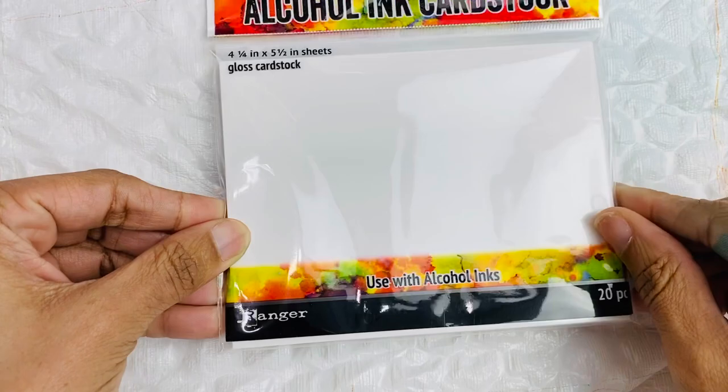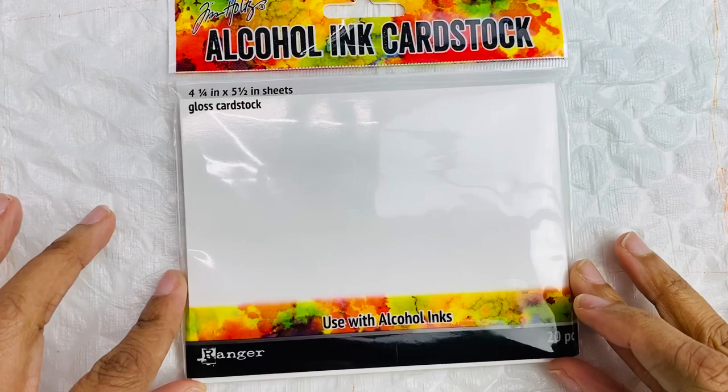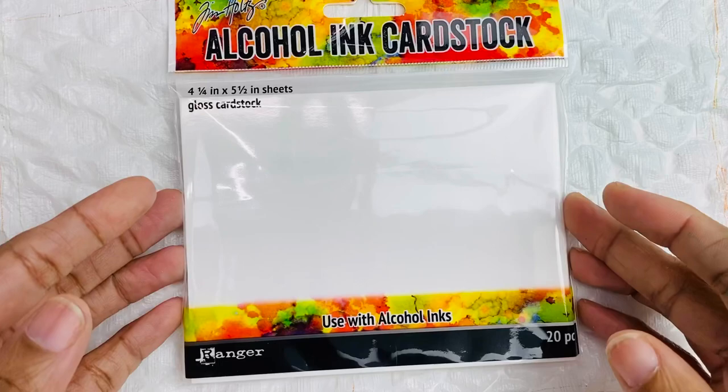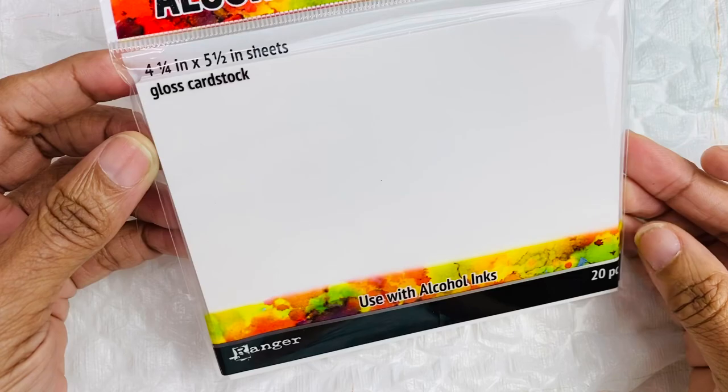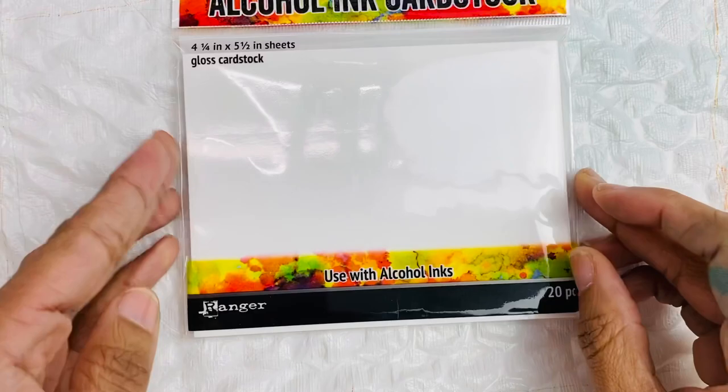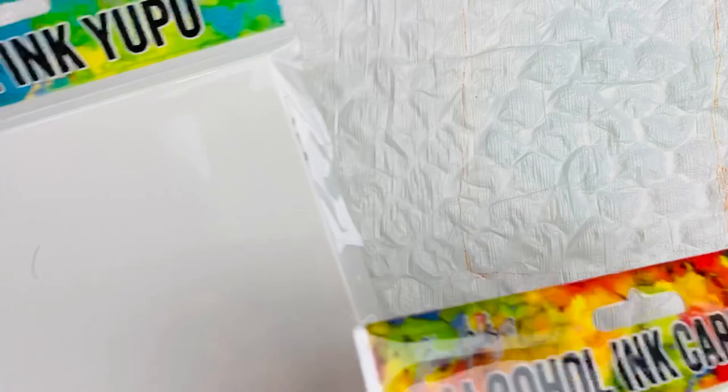So first thing, you're going to need a surface. For the surface that I chose is Rangers, the Ranger brand Tim Holtz alcohol ink cardstock. It comes cut down in this particular size to 4 and 1/4 by 5 and 1/2, 20 sheets in each pack and it's very affordable.